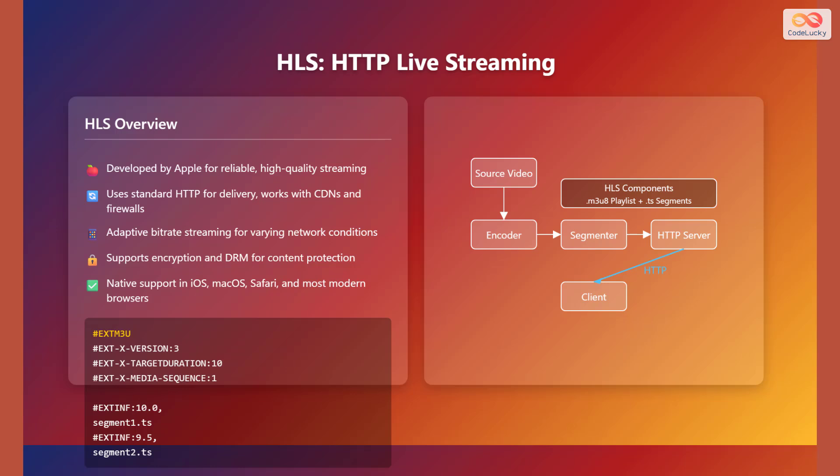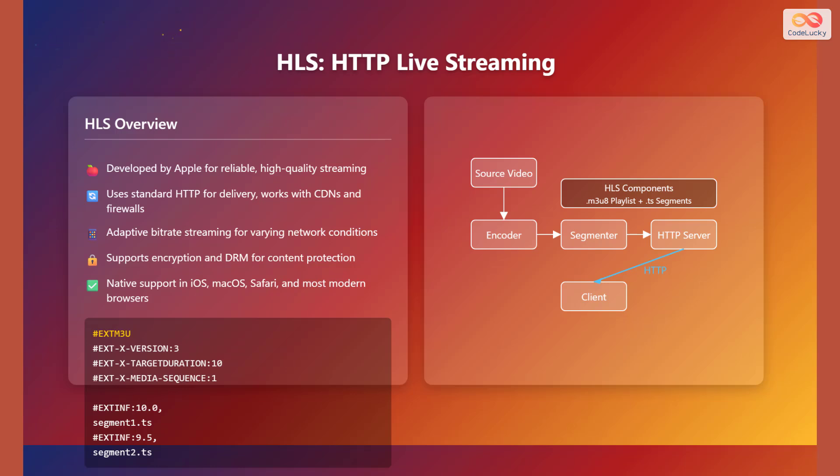The diagram illustrates the HLS architecture. The source video is encoded and then segmented into short transport stream files. An HTTP server delivers these segments to the client, which uses a master URL file to play the video. Here is an example of an HLS playlist file, identified by the #EXTM3U tag, followed by directives like version, target duration, media sequence, and the paths to the media segments.